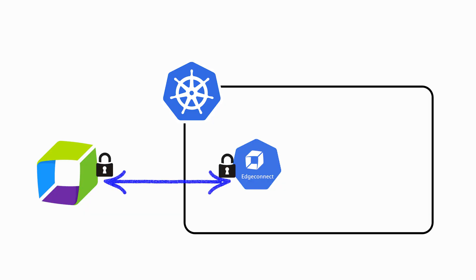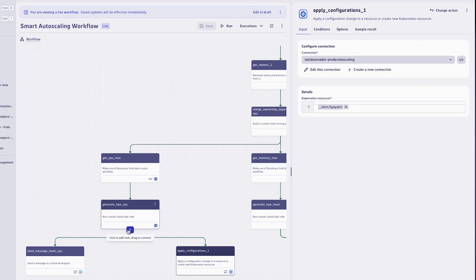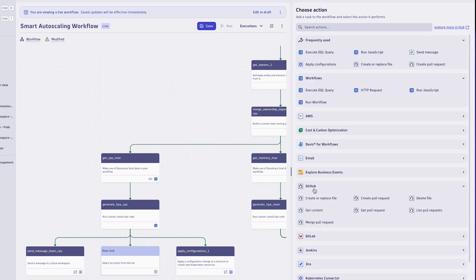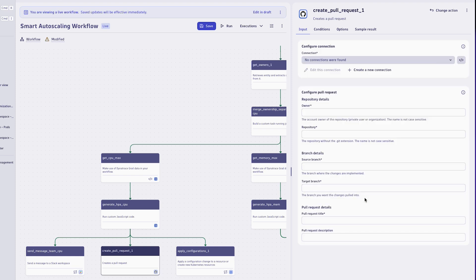We generate the actual HPA manifest and use EdgeConnect to deploy it to the cluster. EdgeConnect is a secure gateway that lets us interact with clusters behind a firewall — Dynatrace connects to EdgeConnect and from there we can interact with the local Kubernetes API. Alternatively, we can create a pull request to our GitHub repo, staying fully GitHub-friendly.